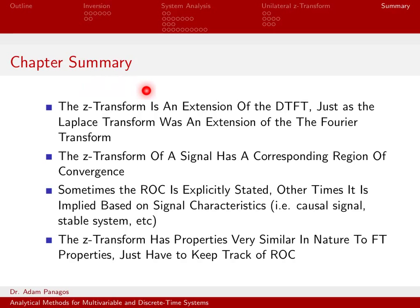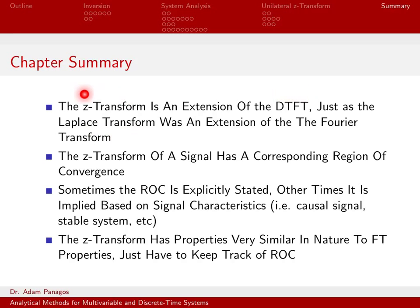This is just exactly what happened when we studied the Laplace transform. If I had the Laplace transform, I could actually get out the Fourier transform of a signal by evaluating the Laplace transform along the imaginary axis. Obviously, for both of these cases, to evaluate it at the set of points that you would like — whether that's the unit circle with the Z-transform or the imaginary axis with the Laplace transform — those points have to be in your region of convergence, otherwise things blow up. But as long as your region of convergence contains the unit circle, you can get the DTFT out of the Z-transform.